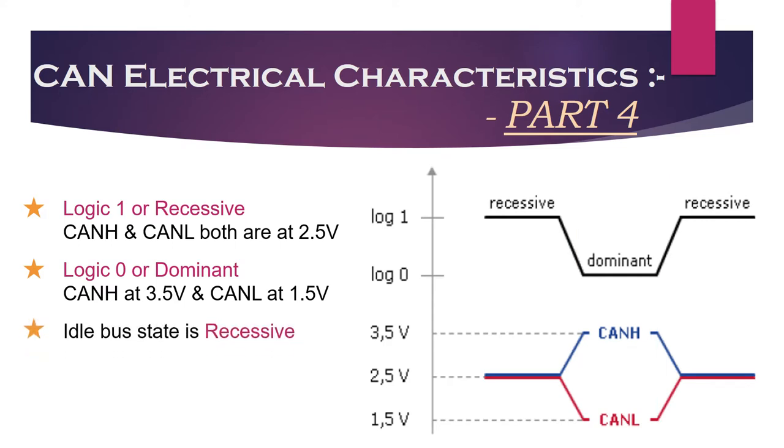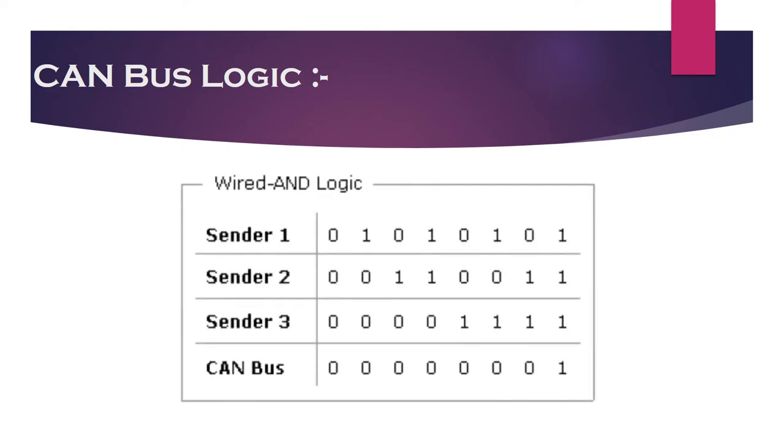The ideal state of the bus is recessive and if one node made the bus state to dominant, it cannot be driven back to recessive by any other node. It clearly means that the dominant state overrides the recessive state. So when different CAN nodes send dominant and recessive bus levels simultaneously, the bus remains at dominant and the recessive bus level occurs only if all nodes send recessive state. Such behavior is called as AND logic and physically it is implemented by open collector circuit.